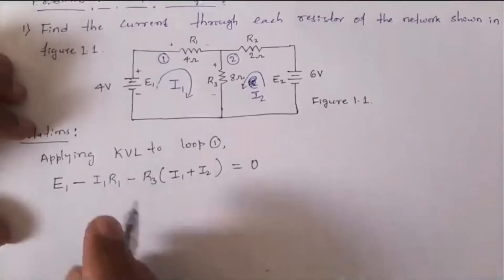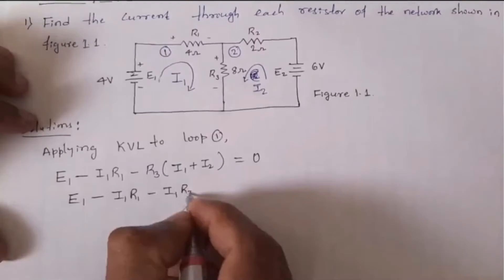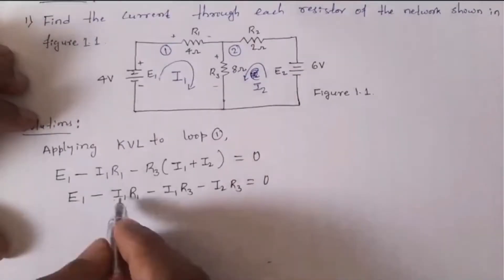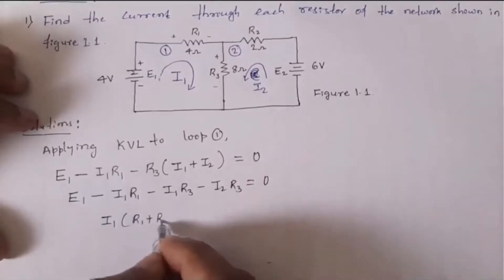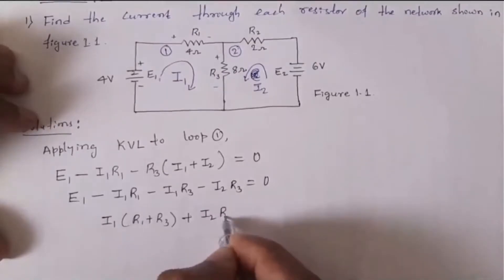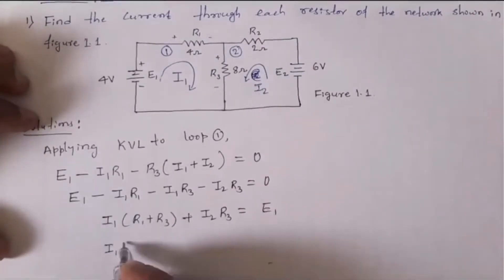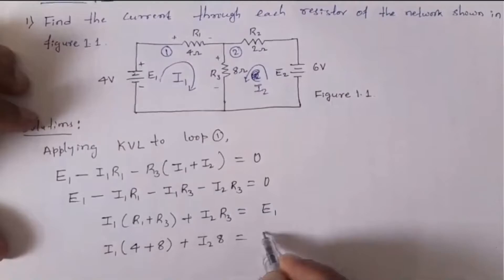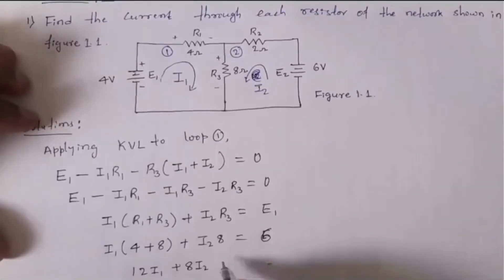So the KVL equation for loop one gives: e1 - i1·r1 - r3·(i1 - i2) = 0, which simplifies to i1·(r1 + r3) - i2·r3 = e1. Substituting values — r1 = 4 Ω, r3 = 8 Ω, e1 = 4 V — we get: 12·i1 + 8·i2 = 4 (but e1 = 4 V, not 6 V). This is equation number one.